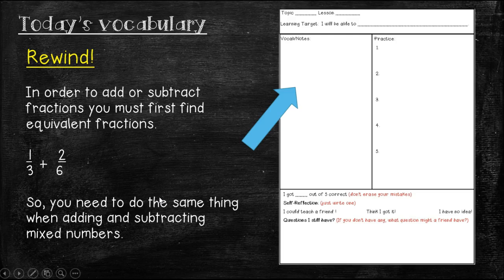Today's vocabulary is really less of a vocabulary word and more of a reminder as to how we add and subtract fractions. So rewind back before winter break, when we were adding and subtracting fractions that had unlike denominators, the first thing we had to do was find equivalent fractions. So in this case, we have one third and two sixths. We're going to need to change one third so that our denominator is a six.